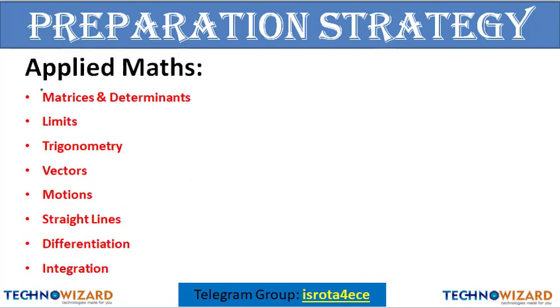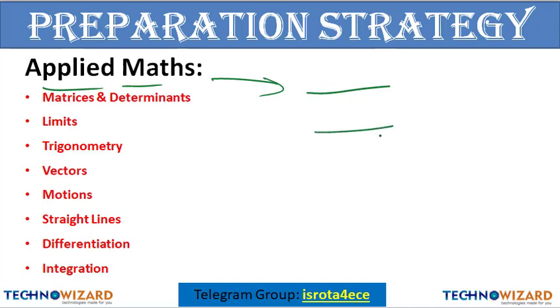Next is applied mathematics. For applied math, you can refer any book — whether it is your diploma book or your 11th and 12th books. These are the topics that are covered in applied math.